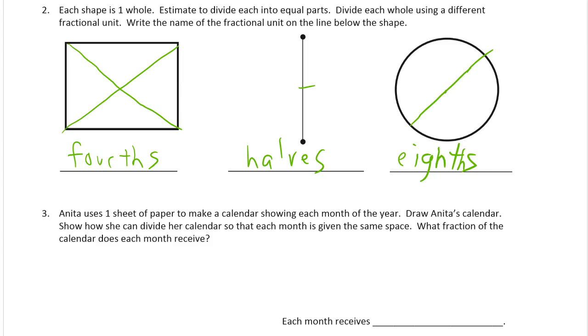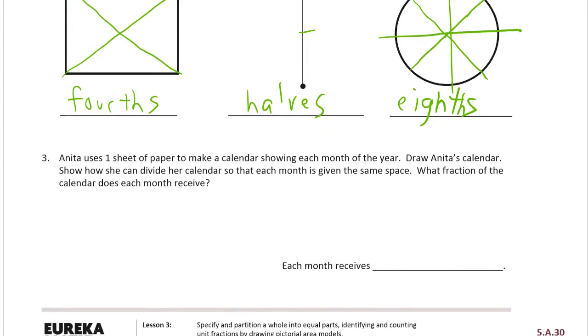So the way to do a circle in eighths is just like pretend you're cutting up a pizza and you have a pizza wheel. Everything has to go through the center. So there, now I have fourths. And if I cut each fourth in half, going through the middle, then I'm going to have eighths. Kind of missed the center there, but that'll have to be close enough.